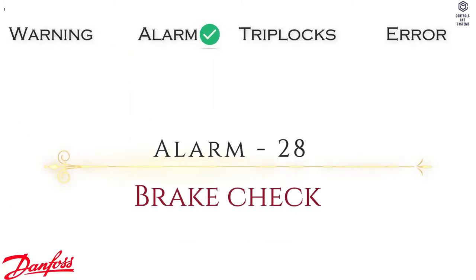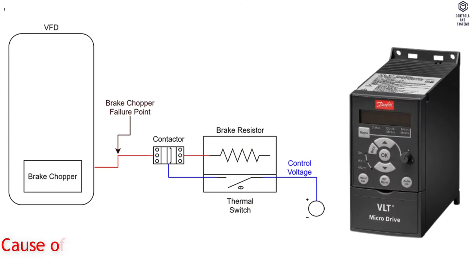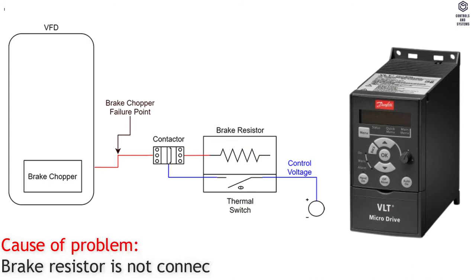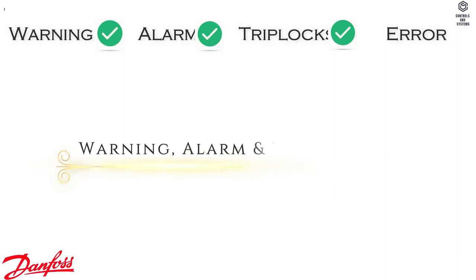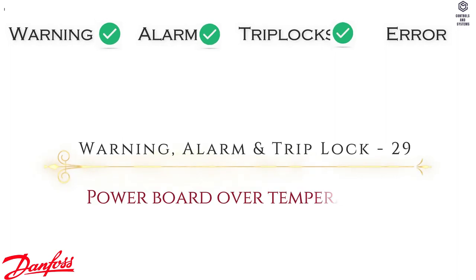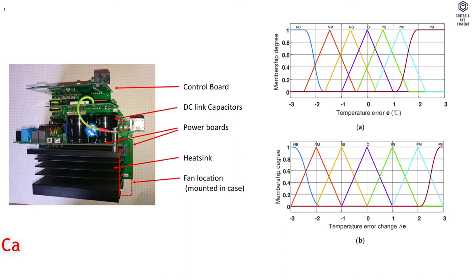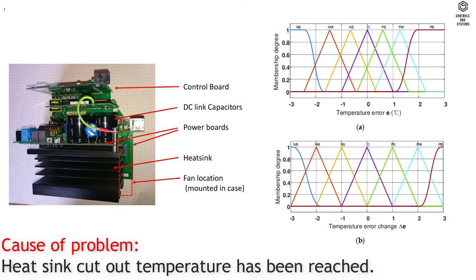Alarm 28: Brake Check. Cause of Problem — brake resistor is not connected or not working. Warning, Alarm and Trip Lock 29: Power Board Over Temperature. Cause of Problem — heat sink cut out temperature has been reached.